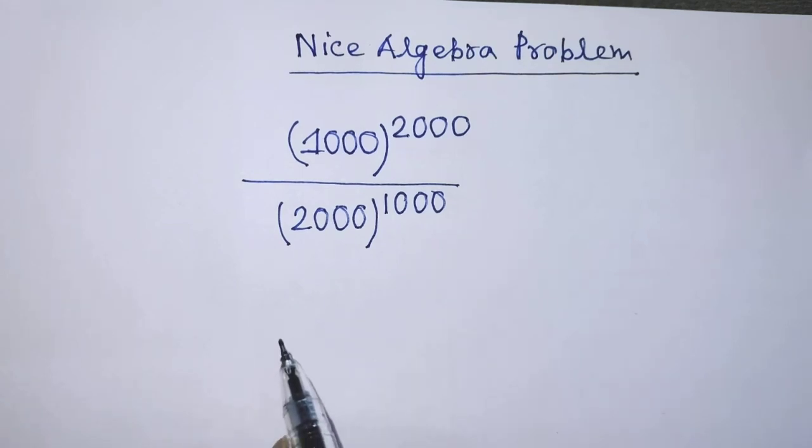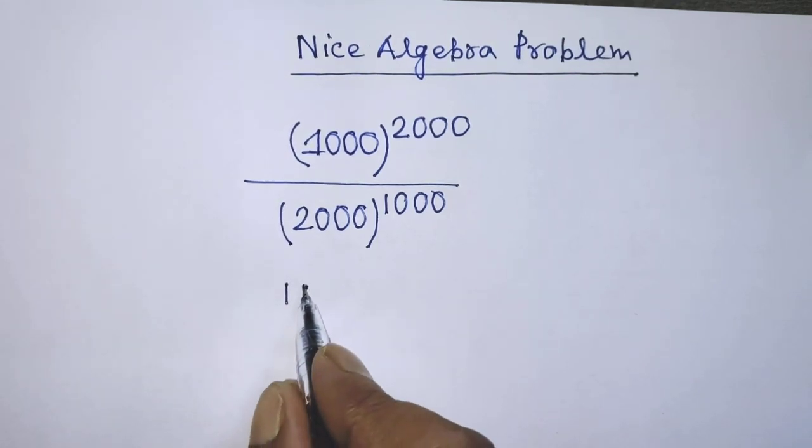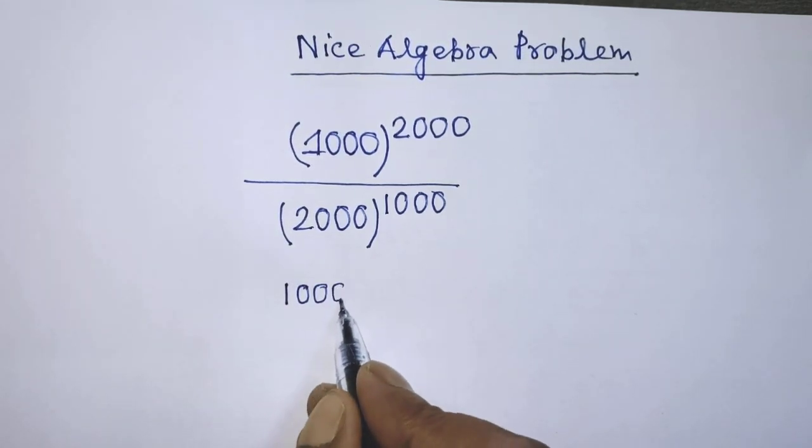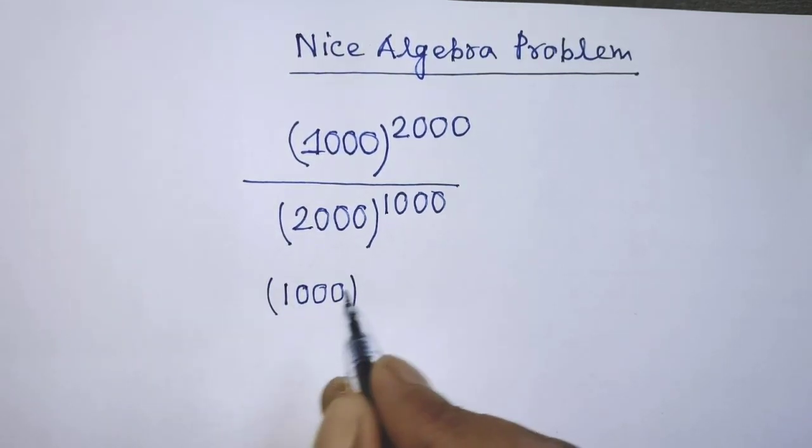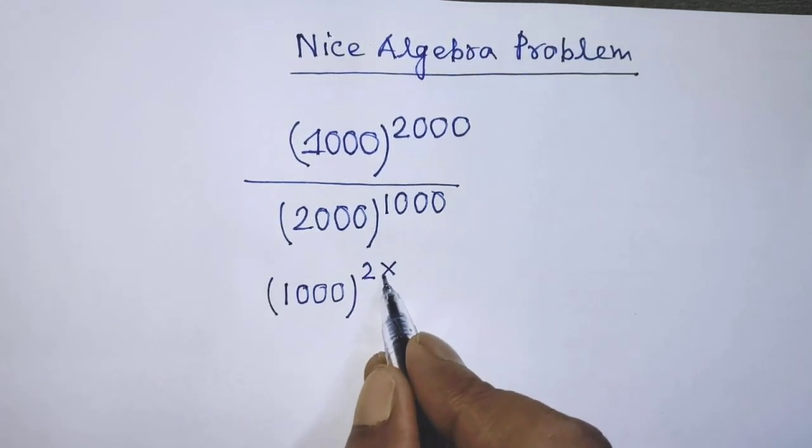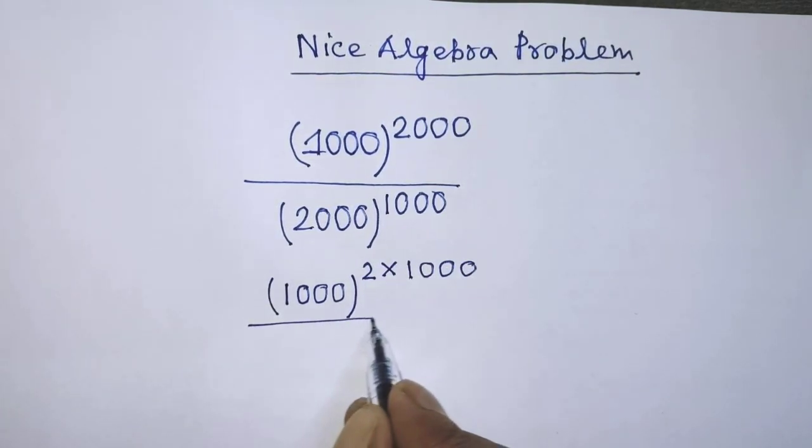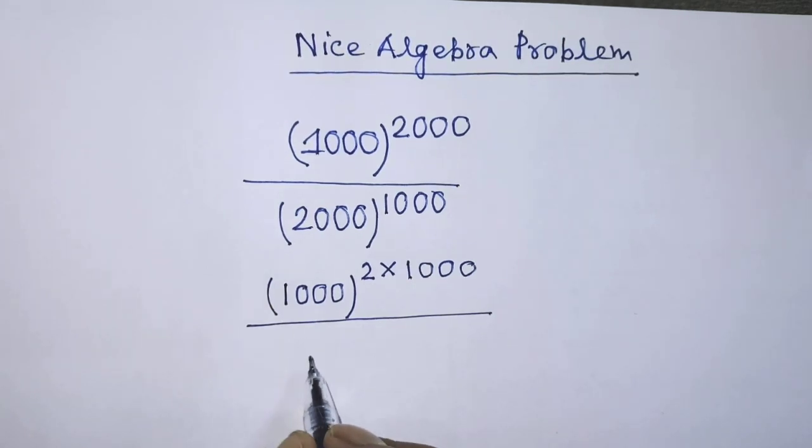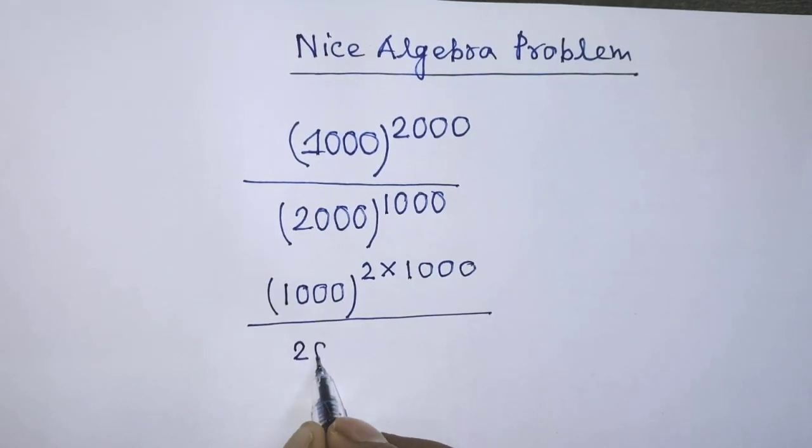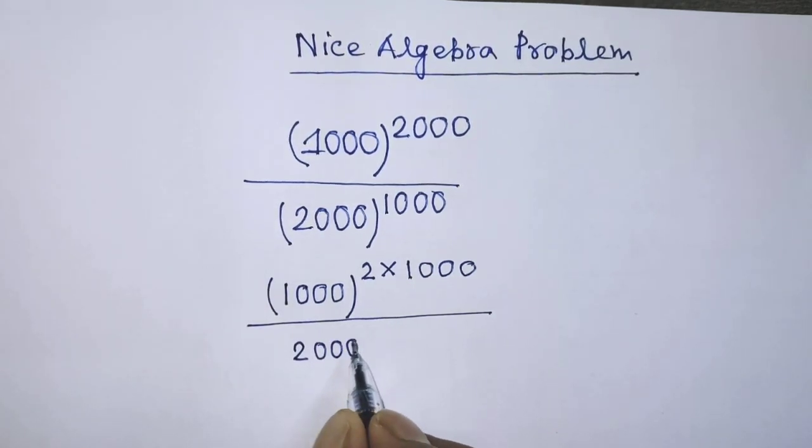In the first step of the solution, it will be 1000 whole to the power 2 times 1000 over, again you have to write 2000 whole to the power 1000.